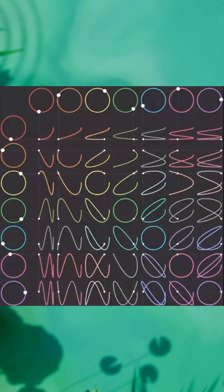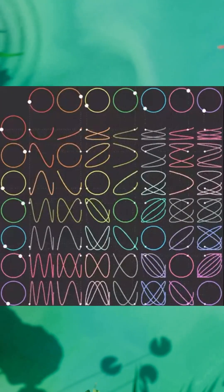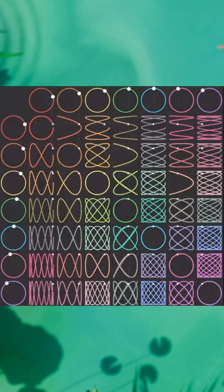In abstract algebra, a composition series provides a way to break up an algebraic structure, such as a group or a module, into simple pieces.